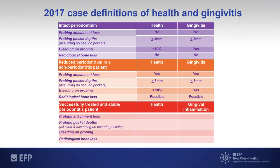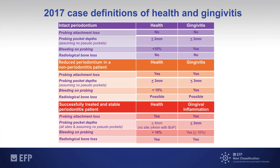The most challenging category is defining health on a reduced periodontium in a periodontitis patient. We define this as having attachment loss, probing pocket depths of 4mm or below with no bleeding 4mm sites, and bleeding on probing at less than 10% of sites throughout the mouth, plus radiological bone loss. Because this is a periodontitis patient for life, using the term 'health' is not ideal in hindsight, so we now use the term 'stability', as shown in the flow diagram.